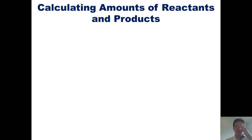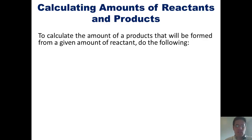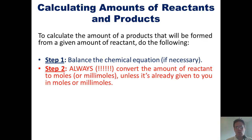We're now going to continue where we left off by teaching you how to calculate the amounts of reactants and products. To calculate the amounts of products that will be formed from a given amount of reactant in a chemical reaction, we have to do the following steps. One, balance the chemical equation unless it's already balanced. Two, always convert the amount of reactant to moles or millimoles unless it's already given in moles or millimoles.